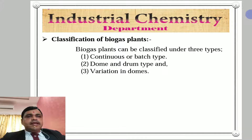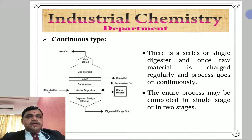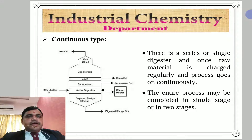Biogas plants can be classified under 3 types: number 1, continuous or batch type biogas plant; number 2, dome and drum type biogas plant; and number 3, variations in domes. Continuous type biogas plant is further divided into 2 types: number 1, single digester, and number 2, double digester. We will see both types of continuous biogas plant in this lecture.